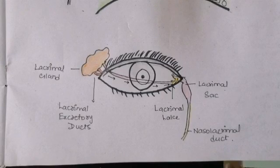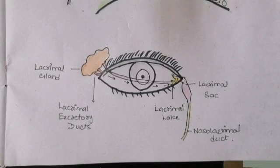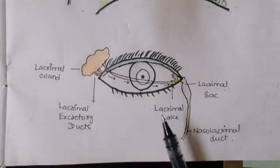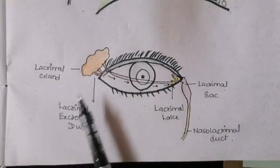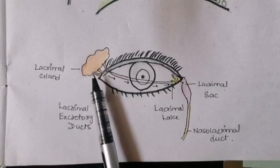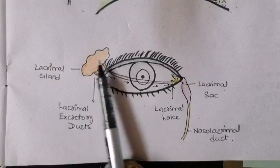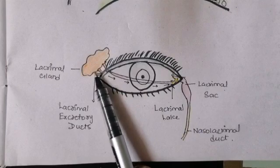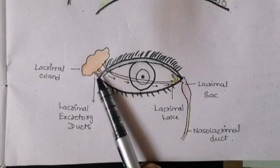The lacrimal apparatus is very easy to understand, though its drainage pathway is quite complex. Starting from the contents forming the lacrimal apparatus: in this diagram you can see all the contents, including the lacrimal gland that is present laterally on the upper part of the eye at the superciliary arches, on the lateral and superior side of the eye.